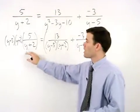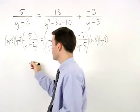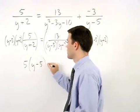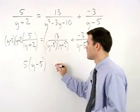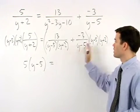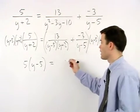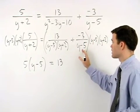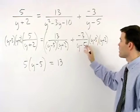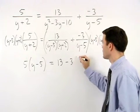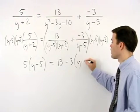On the left, the y plus 2's cancel so we have 5 times parentheses y minus 5. On the right, in the first fraction the denominator cancels out entirely so we have 13. In the second fraction, the y minus 5's cancel so we have minus 3 times parentheses y plus 2.